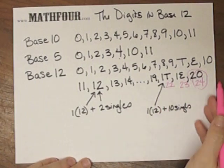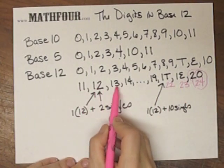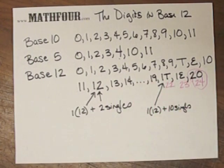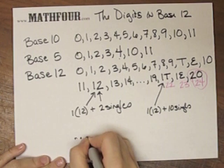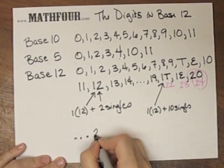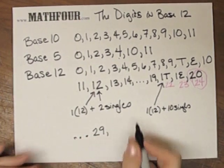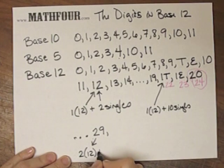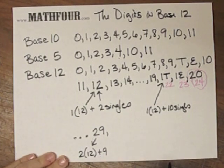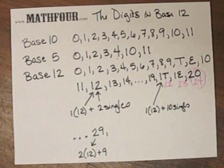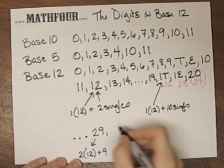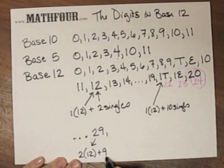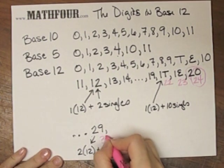And then we continue the cycle again 2, 1, 2, 2, 2, 3, on up to 2T. So let's do this. So 2, 9 is 2 sets of 12 plus 9 singles. And there's my alarm. How nice is that right in the middle?